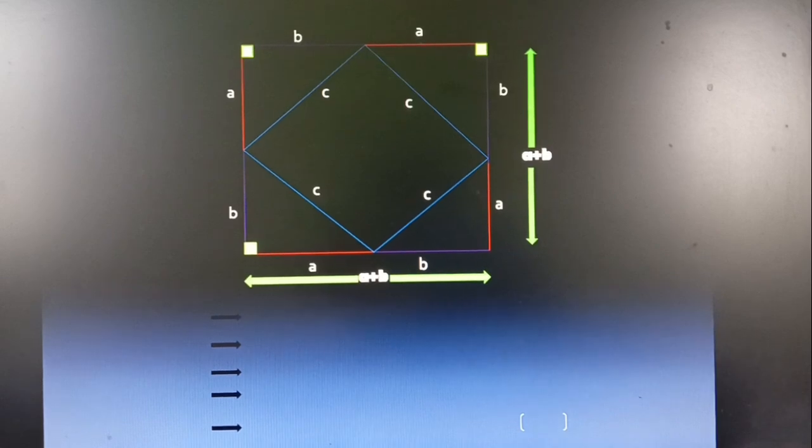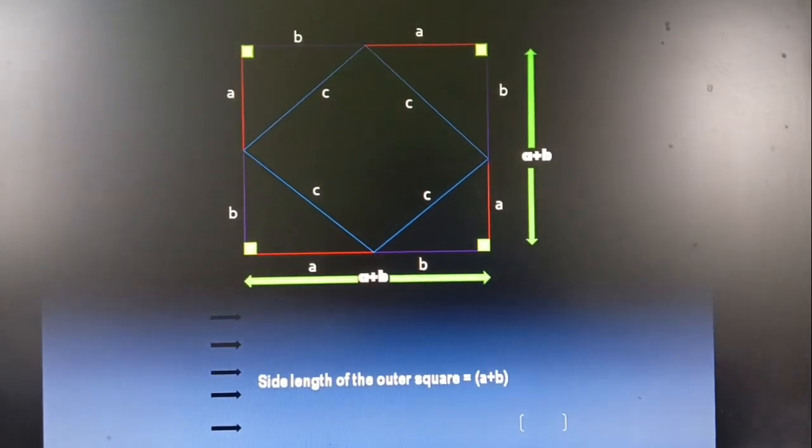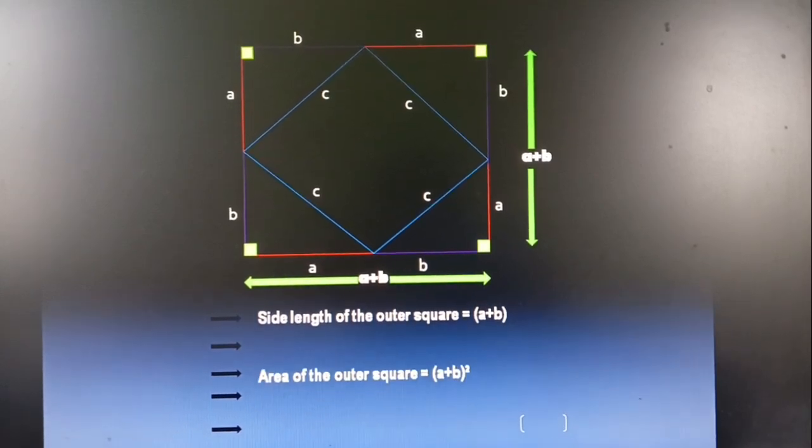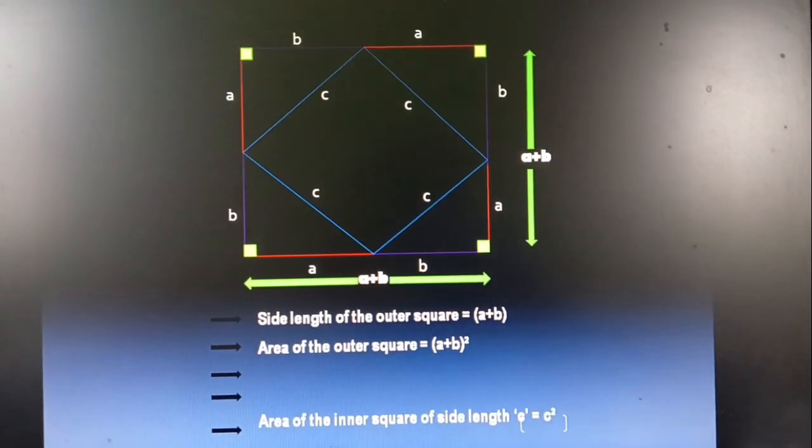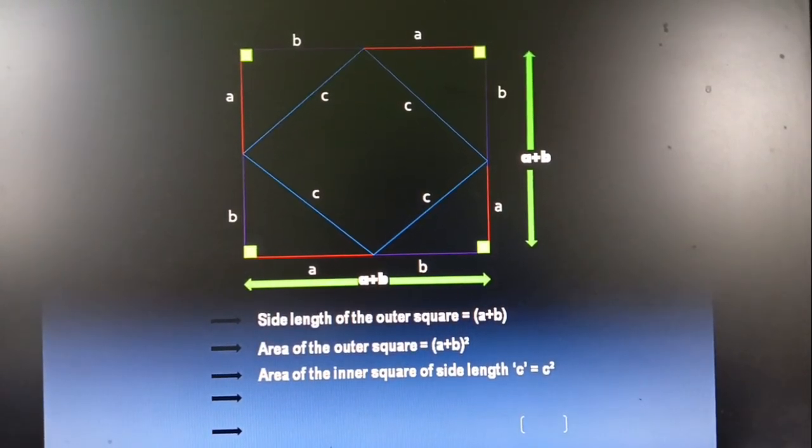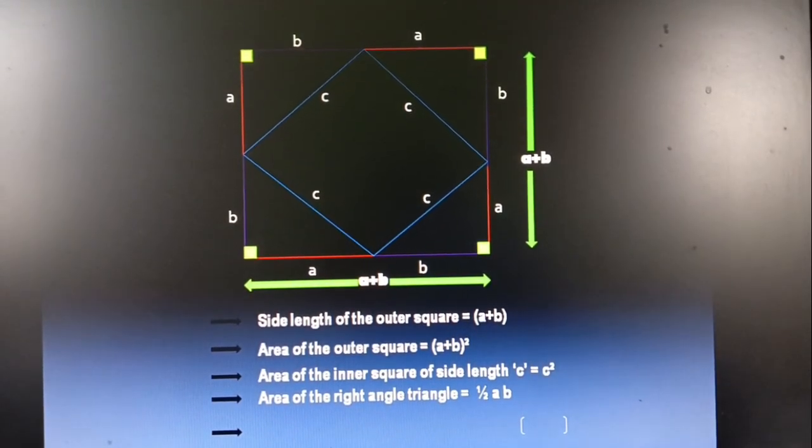Therefore, we can say that the area of the outer square whose side length is A plus B is equal to A plus B whole square and the area of the inner square of side length C is C square. Also, area of each right angle triangle is half AB.